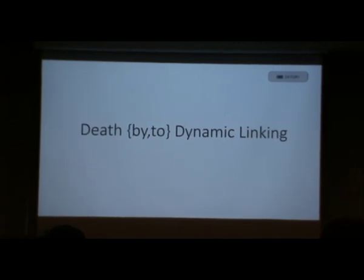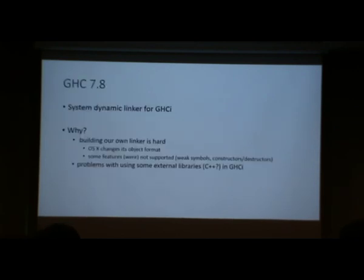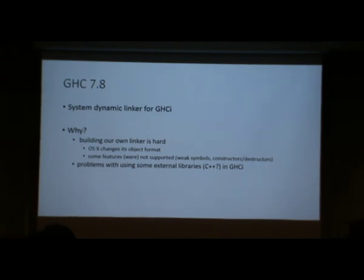I just wanted to do a quick retrospective on dynamic linking. I'm not sure how many people are aware of how much of a complete disaster dynamic linking is. In GHC 7.8 we decided to switch from the existing dynamic linking approach. We still have a linker built into the runtime system, a linker that we wrote ourselves. It's unbelievably complicated. So it seemed like a good idea to try to get rid of it, and the way you get rid of it is by using the system dynamic linker instead.